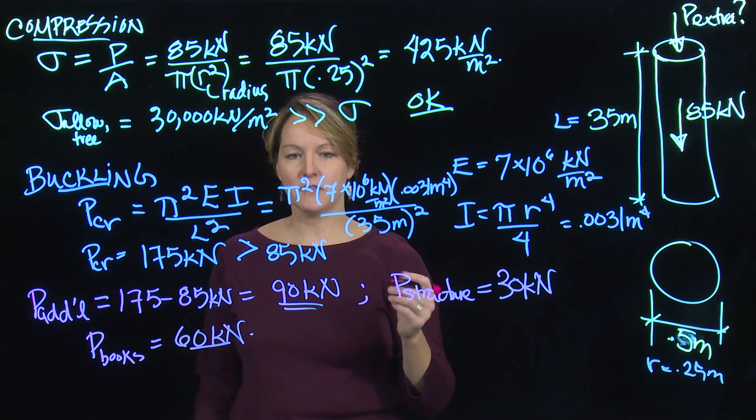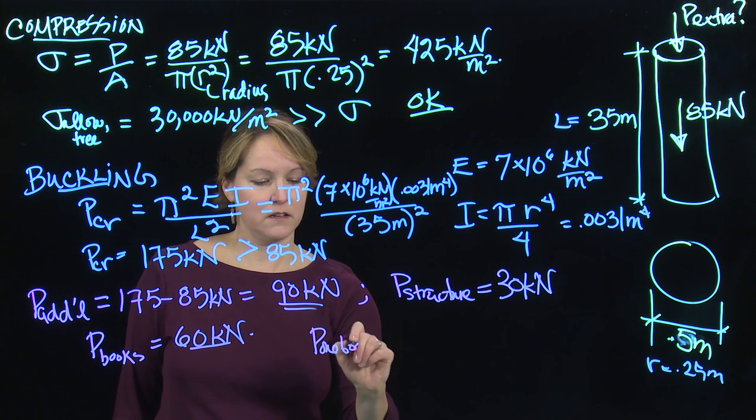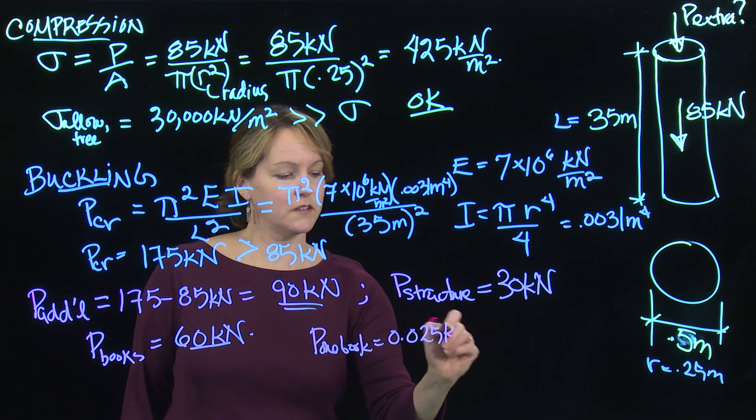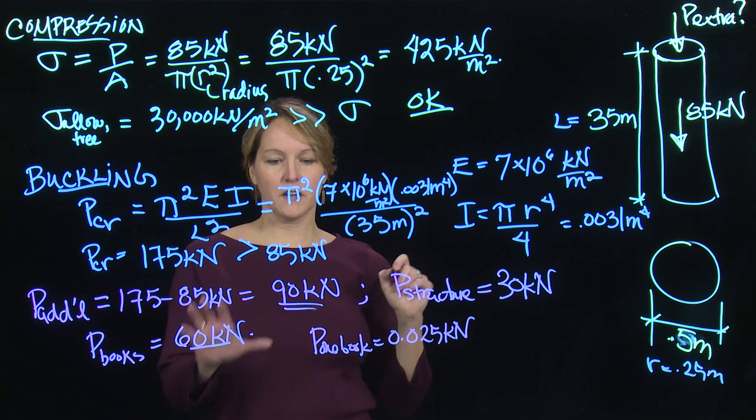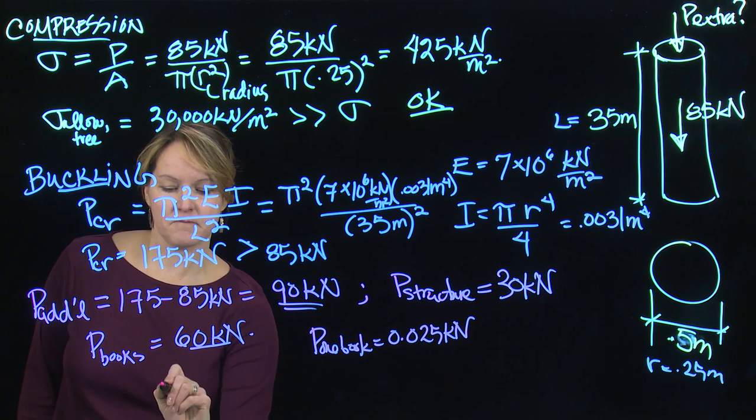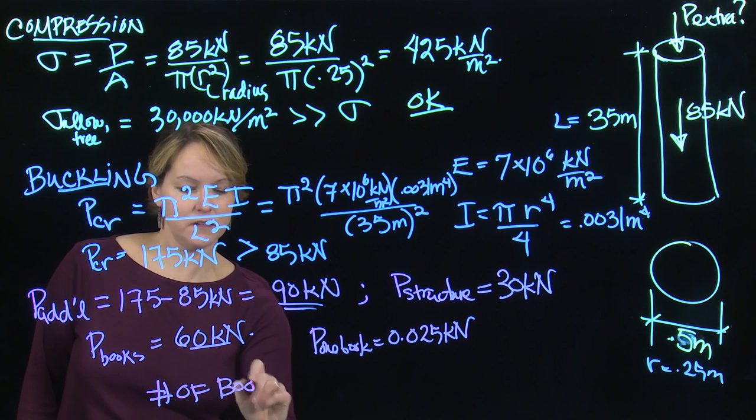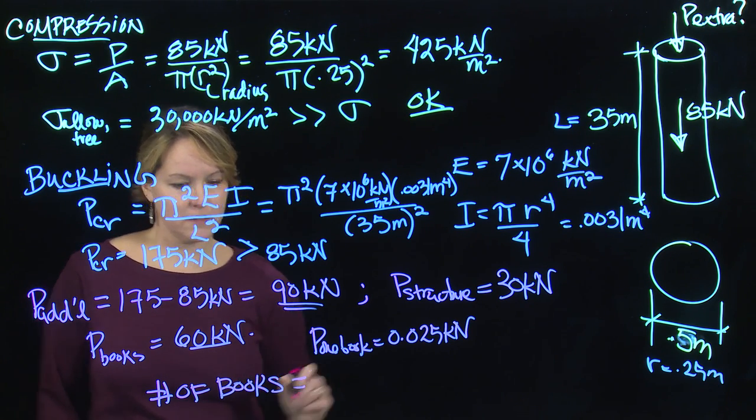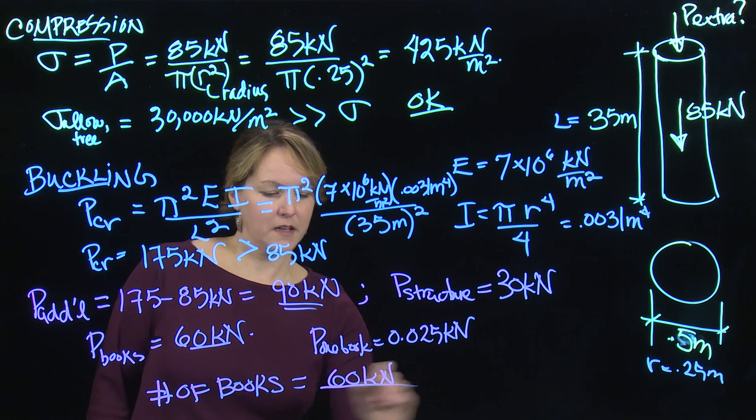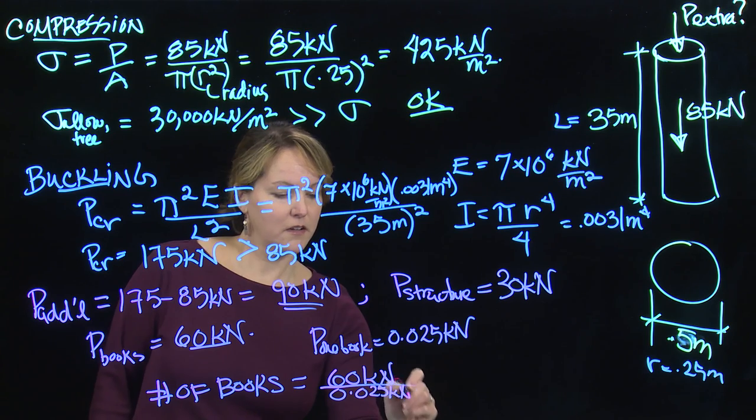I went and looked up how much one book would weigh. One book weighs very small, 0.025 kilonewtons is a fairly big book. If I want to figure out how many books owl can put in his library, the number of books is my allowable load, 60 kilonewtons, divided by the weight for one book, 0.025 kilonewtons per book.